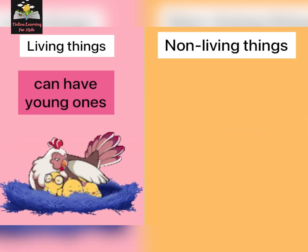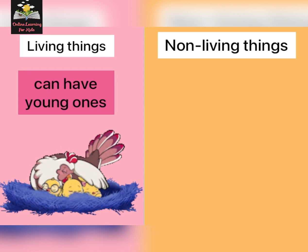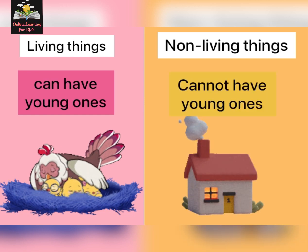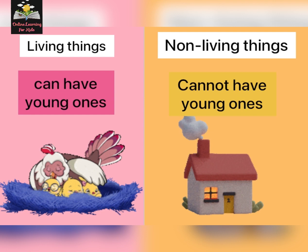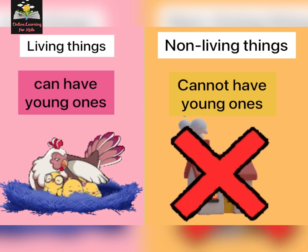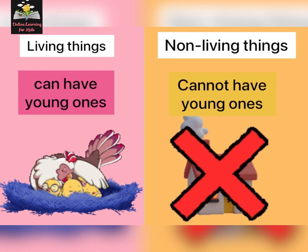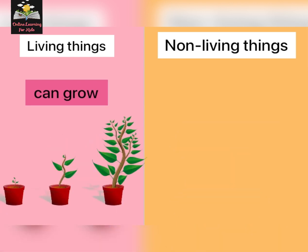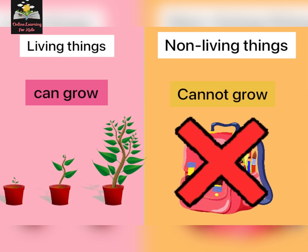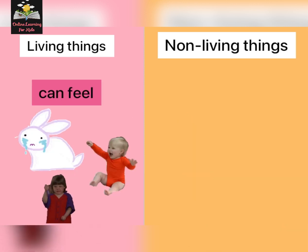A book and a lock — do they breathe? No. Living things can have young ones, like a hen has chicks, and non-living things cannot have young ones. Living things can grow — see it convert into a plant — and non-living things cannot grow.